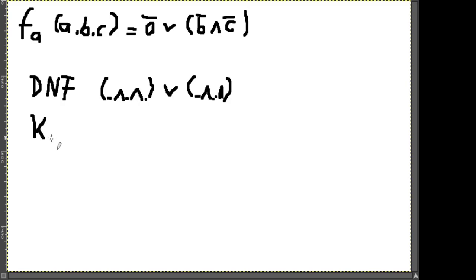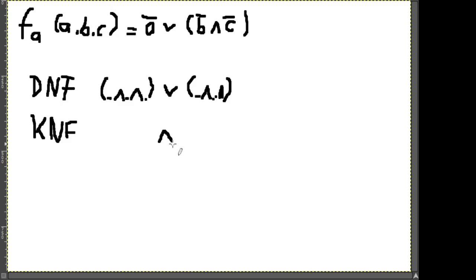Das andere ist die KNF, die konjunktive Normalform. Der Name sagt es: konjunktiv, das Zusammenverbundene ist das Und. Wir haben dann diverse Terme, wo die Variablen mit Oder verbunden sind. Das ist die Ausgangslage, wo wir am Ende eigentlich hinwollen.